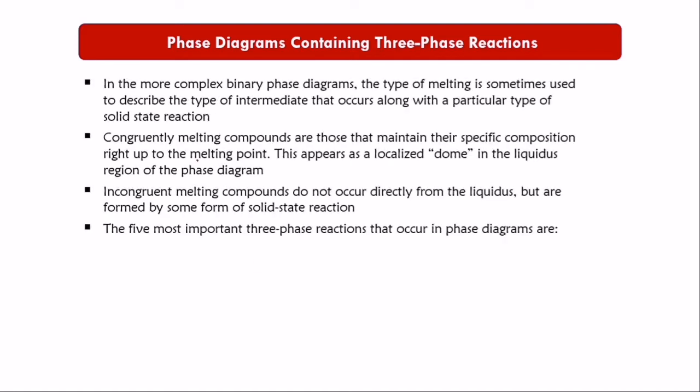Next we look at phase diagrams containing three-phase reactions. We'll learn how to identify eutectic, peritectic, monotectic, eutectoid, peritectoid, and monotectoid reactions. In more complex binary phase diagrams, the type of melting is used to describe the type of intermediate compound along with a particular type of solid-state reaction.